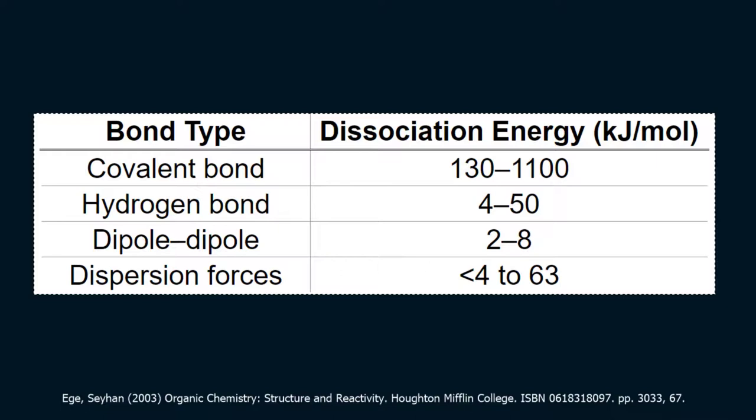These intermolecular bonds are vital in determining some of the most important properties of materials. We saw an example of how hydrogen bonding dramatically changes the boiling point of water compared to what we would expect.